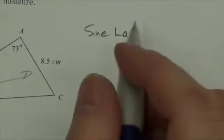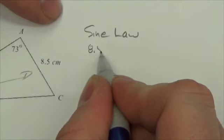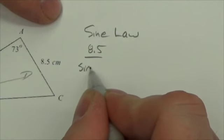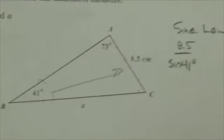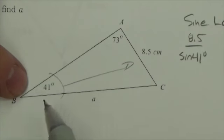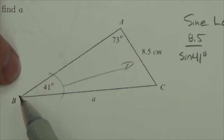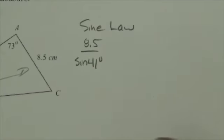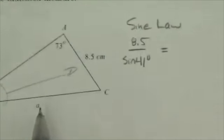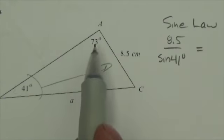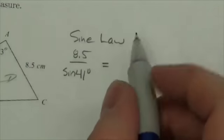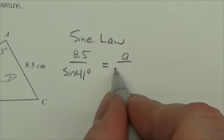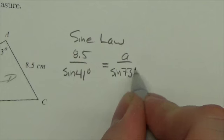Okay so now I can write 8.5 divided by the sine of 41 degrees. That's this ratio right here. Notice it's not over 41 it's over the sine of 41 and that will be equivalent to the value of a over the side of the angle opposite that. So this will be a over the sine of 73 degrees.